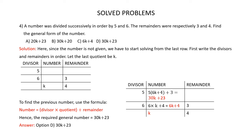Question 4: A number was divided successively in order by 5 and 6. The remainders were respectively 3 and 4. Find the general form of the number. You are given 4 answer options. Since the number is not given, we have to start solving from the last row. First write the divisors and the remainders in order.